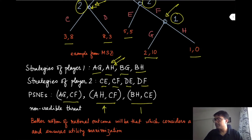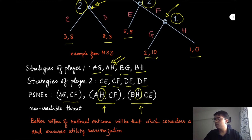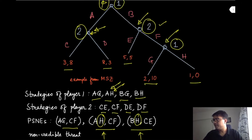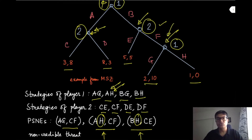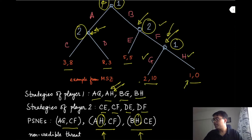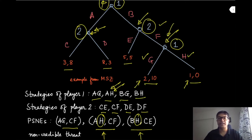If you look at these two strategy profiles, player one is playing action H in the second round. Player one can play H only when it is at this node, and if this node is ever reached in this game, do you think player one will play H? Because if player one plays H it gets a utility of 1, while by playing G it gets a utility of 2. So this goes against the idea of rationality — whenever a player can pick an action which maximizes its utility, it will always pick that. This is not consistent with that notion of rationality.